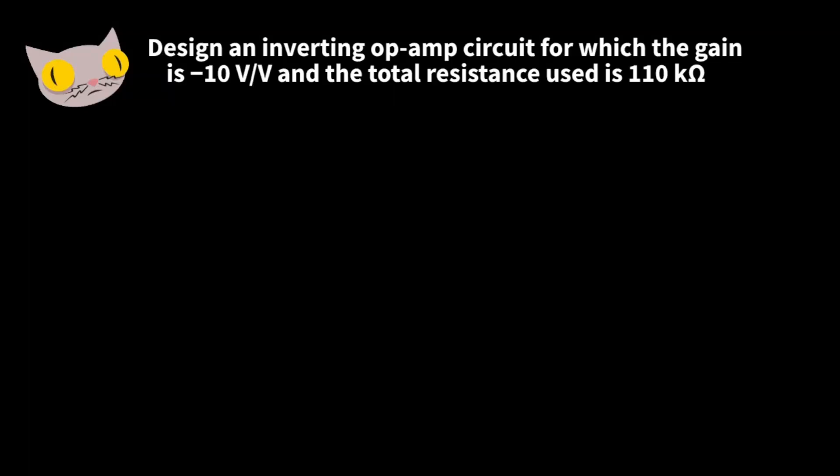Let's design an inverting op-amp circuit for which the gain is negative 10 and the total resistance used is 110,000 ohms.